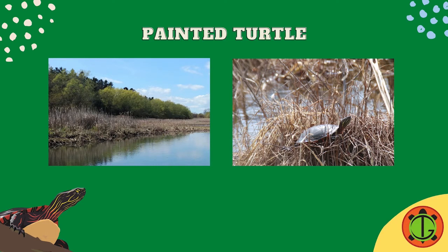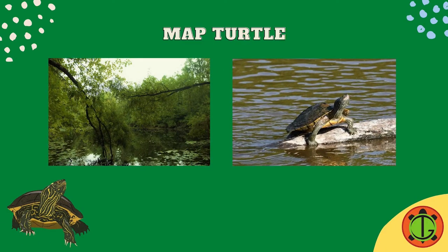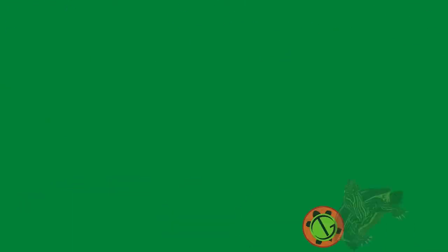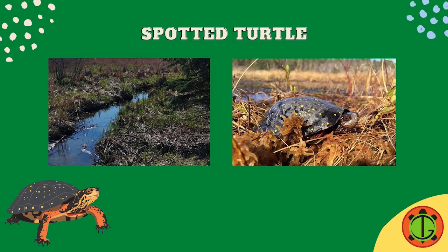Both the midland and western painted turtles are generalists. This means they aren't picky about where they live and what they eat. You can find these turtles in most small wetland pockets, ponds, rivers, and streams. Map turtles are active during the day and very shy. They like slow-moving wide rivers, large ponds, and lakes with muddy bottoms and lots of vegetation. The spotted turtle is small, so it likes shallow, slow-moving ditches, rivers, and pools with mucky bottoms. You can find them in bogs and fens too.